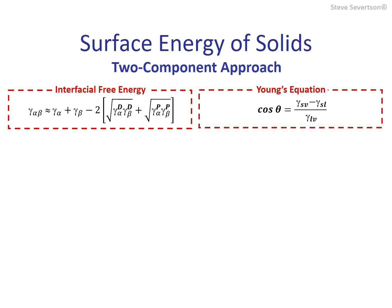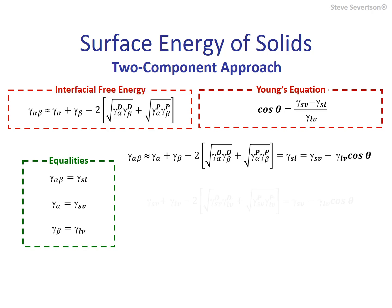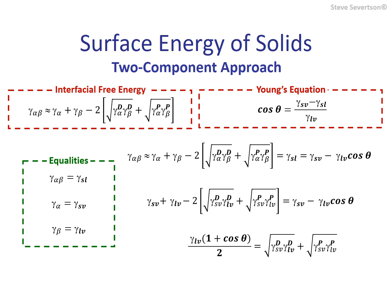Returning to Young's equation — we can measure contact angle, we can measure surface tension, we are after the surface energy of the solid, and we have a way to estimate the interfacial energy. We've taken that estimate for interfacial energy and broken it down into contributions from polar and dispersive type interactions. Plugging this expression into Young's equation for the interfacial energy and rearranging, we obtain an equation we can use along with contact angle measurements for different organic probe liquids to estimate the solid's surface energy.